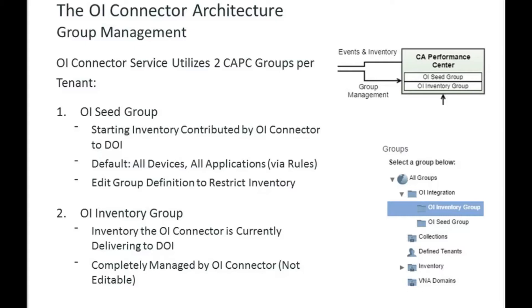If a customer wants to tune down the inventory that's sent, they would edit the seed group — for example, restricting from all devices to just routers or some subset. Under all groups in CA Performance Center, there will be an OI Integration parent group containing two subgroups: the seed group and the inventory group. The inventory group is read-only and keeps track of the current state of inventory being delivered to DOI.